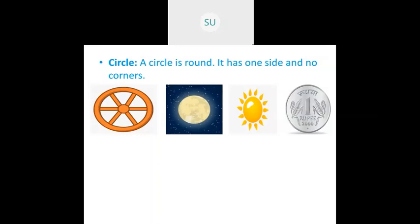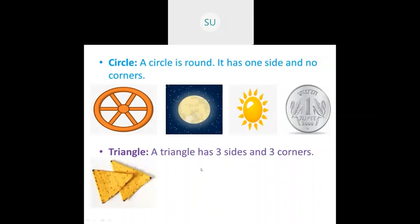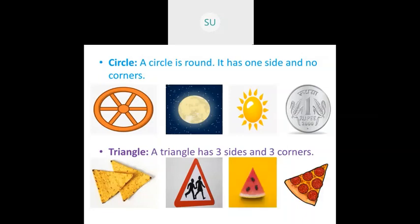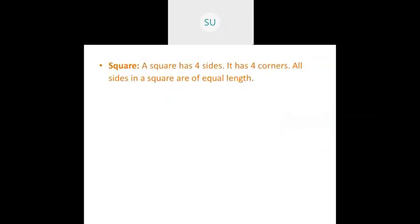A triangle has three sides and three corners. Examples of triangular shapes include traffic signs, watermelon slices, and pizza. These are all triangular in shape.